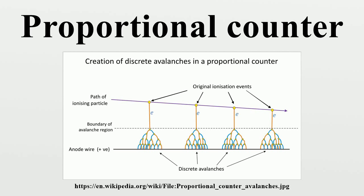The number of ion pairs created by the incident ionizing charged particle is proportional to its energy. The energy resolution of a proportional counter, however, is limited because both the initial ionization event and the subsequent avalanche are subject to statistical fluctuations characterized by a standard deviation equal to the square root of the average number formed. However, in practice these are not as great as would be predicted due to the effect of the empirical Fano factor, which reduces these fluctuations.